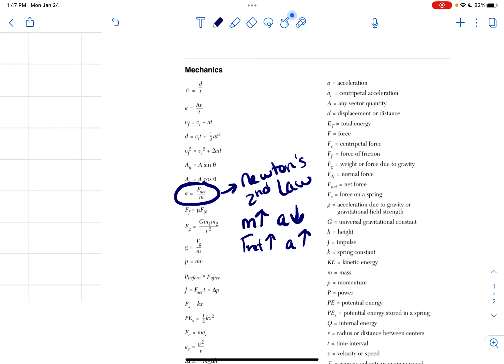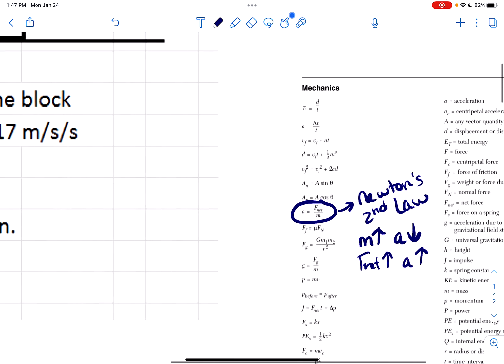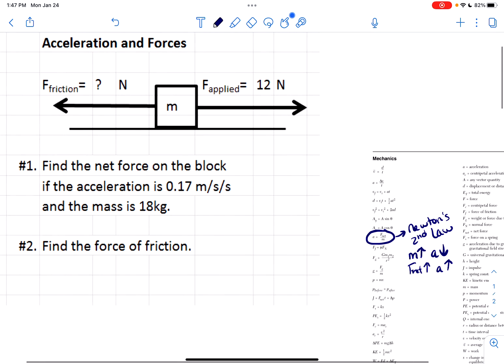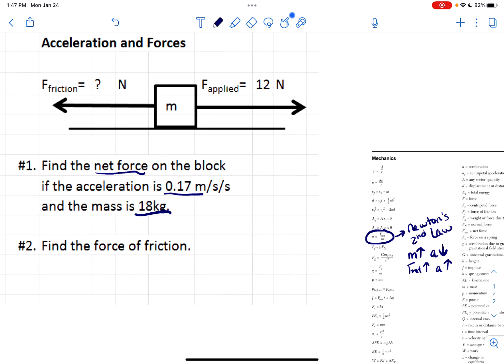Those are just some trends of this equation that you should know when you see this. For the do now, it says find the net force on the block if the acceleration is 0.17 meters per second squared and the mass is 18 kilograms. That's what we are given. We want net force and I know some of you like to use the triangle visualization of the equation.